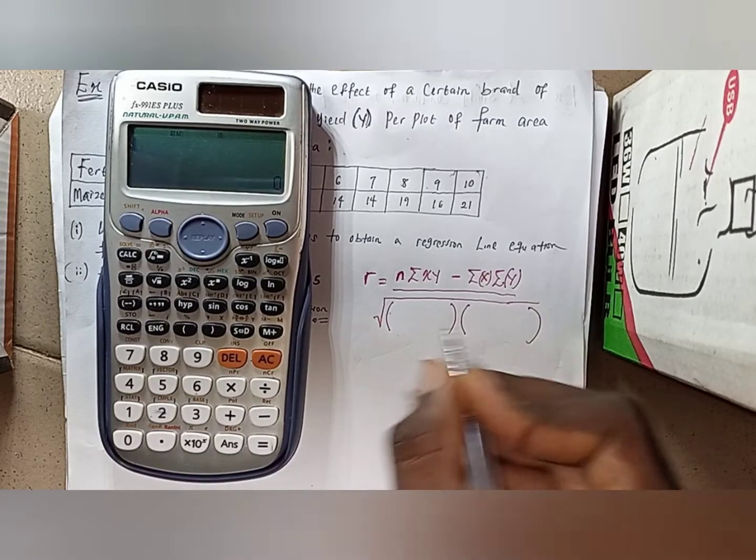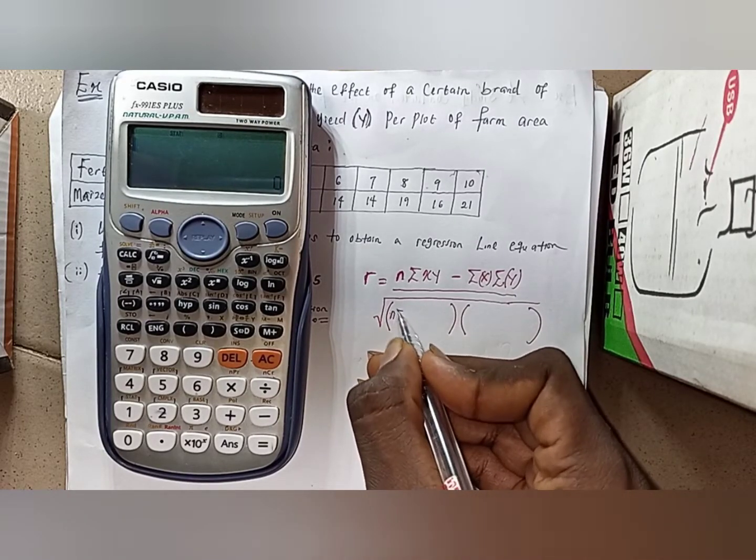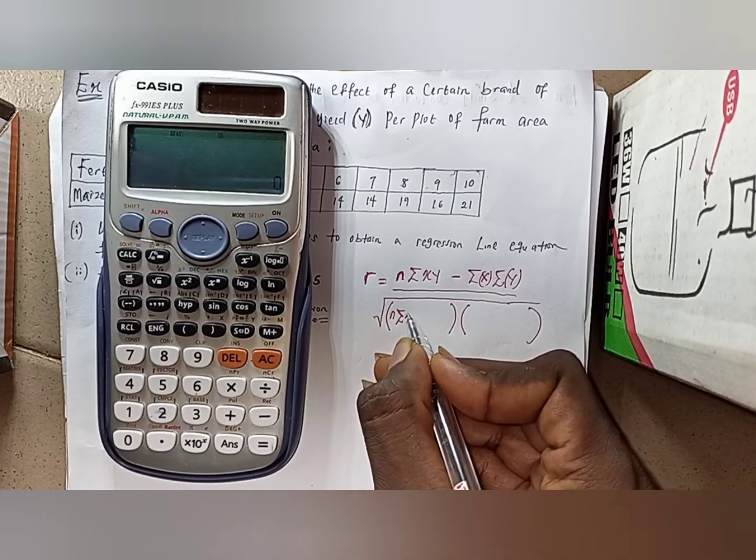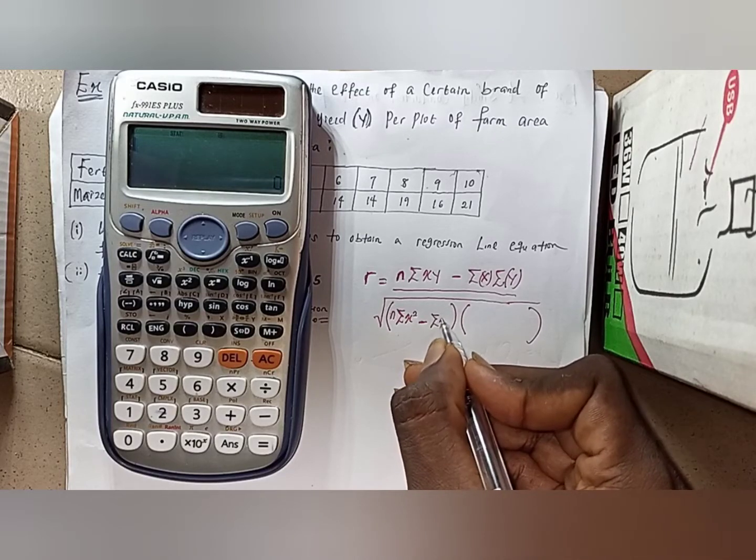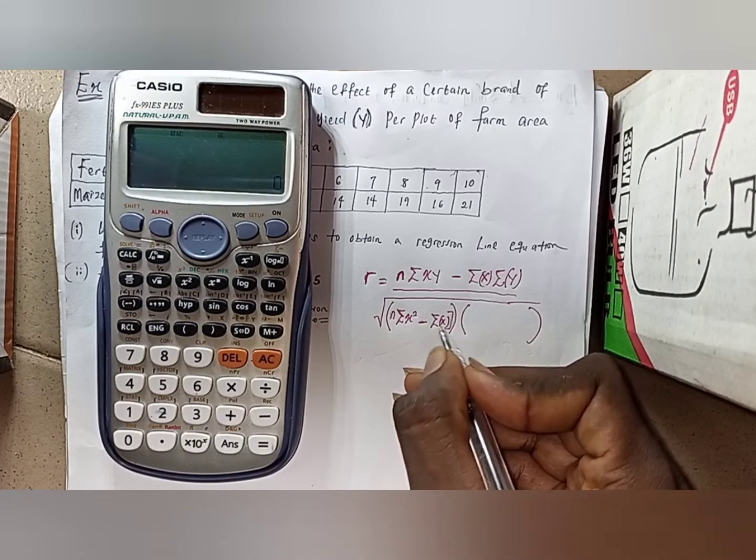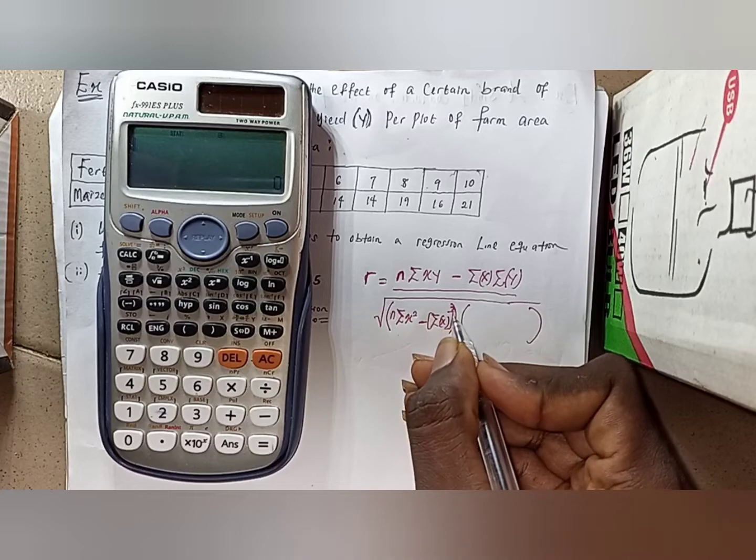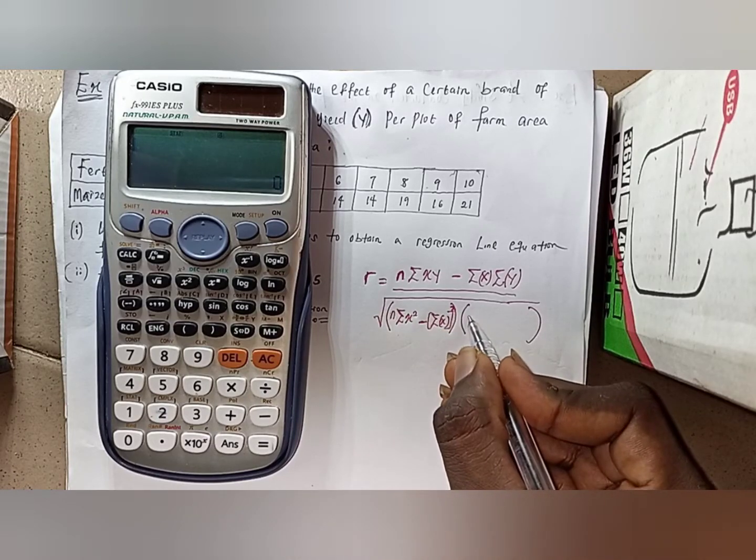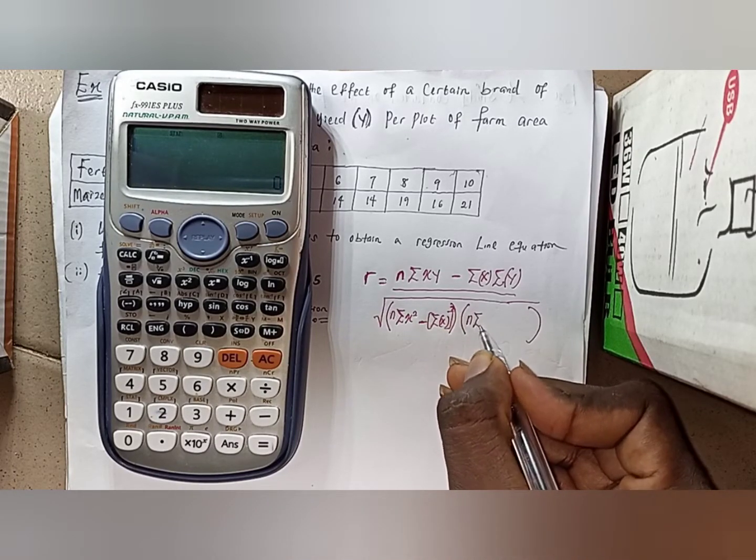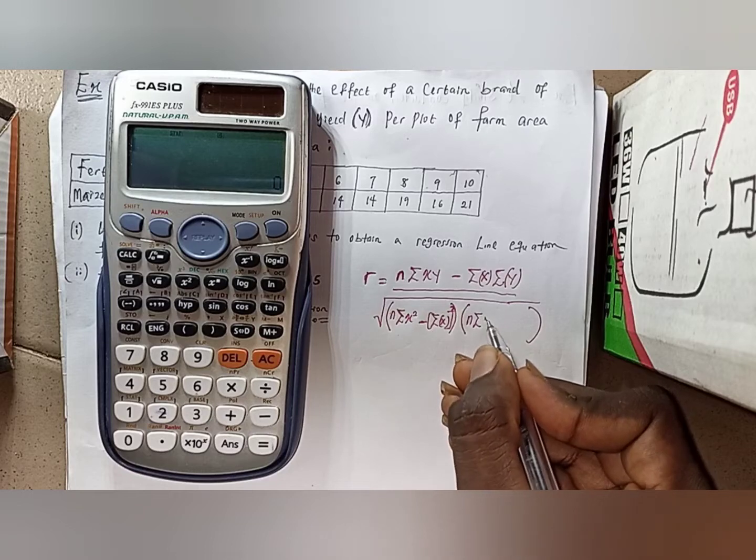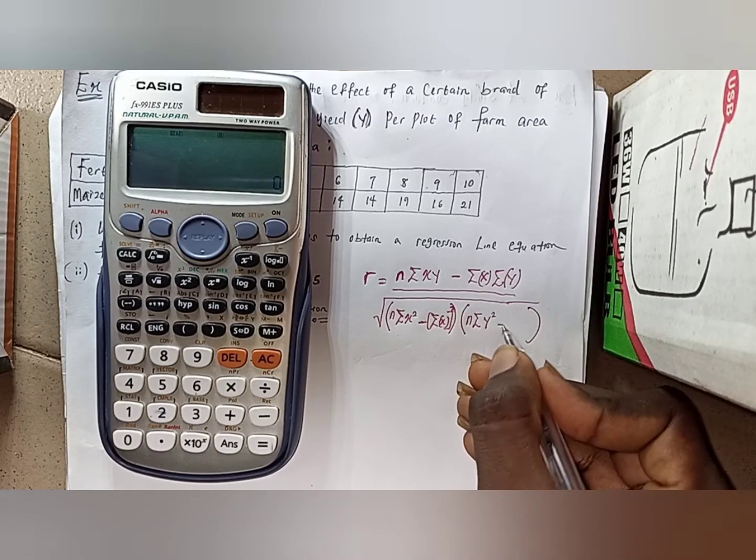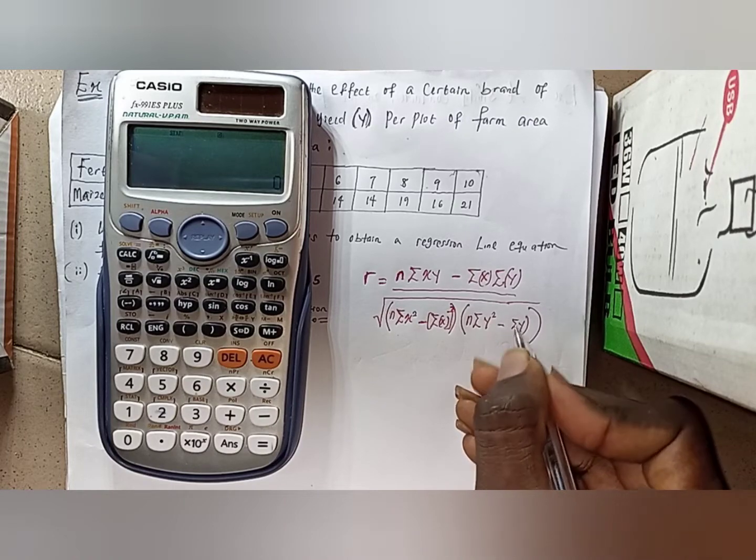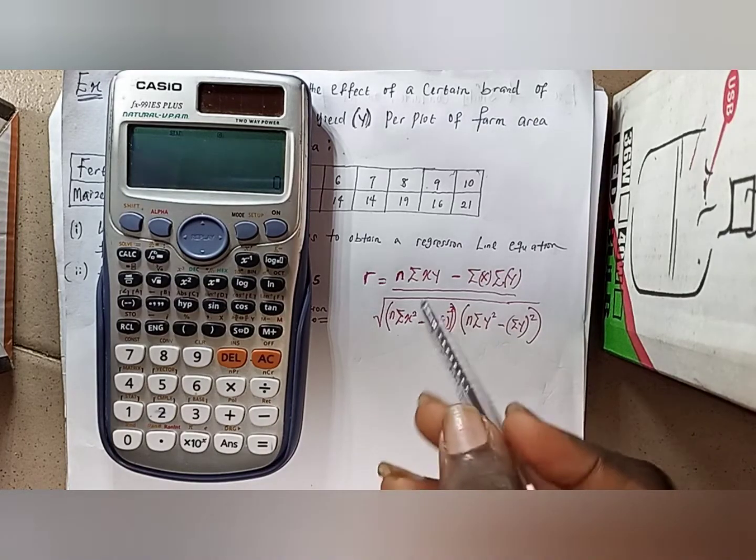Then divided by the square root of two products. We have n times summation of the squares of the data minus the summation of your x data, then squared. And summation of y squared, that is the sum of all your y's, minus the summation of y, then square the result.